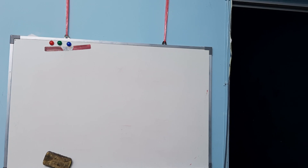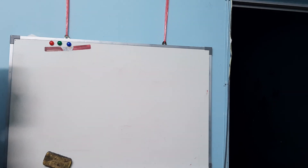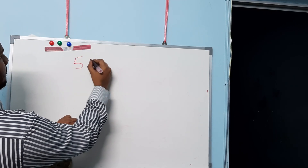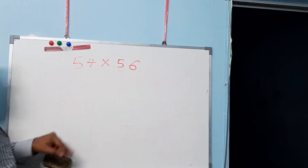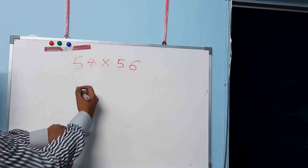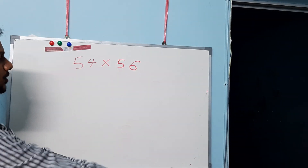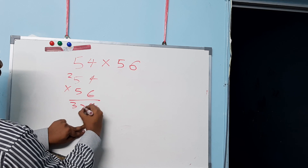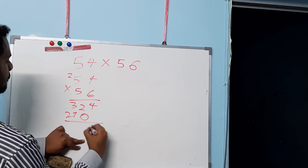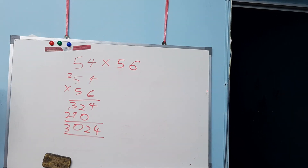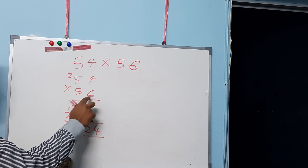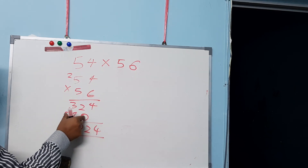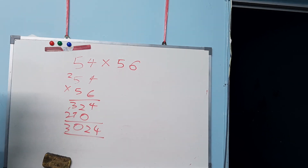In this video we are going to use Vedic mathematics to solve some multiplication sums. Let's start with the example 54 times 56. The conventional way would be multiplying 54 by 6, putting the value down, then 54 times 5, putting that value, and adding the results to get an answer. Now let's use Vedic maths.